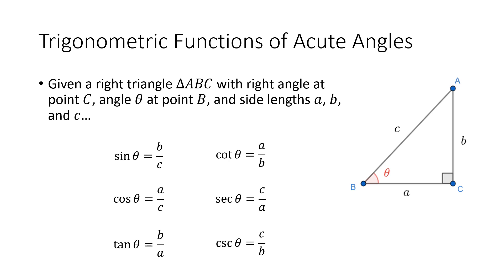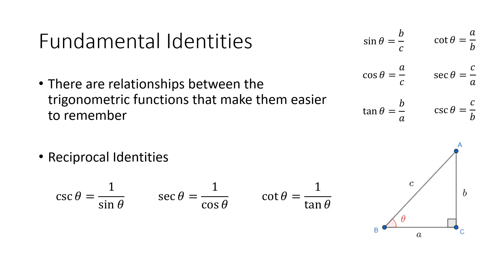then we've got sine, cosine, tangent, cotangent, secant, and cosecant, which are all ratios of the lengths of the three sides of this triangle. So the fundamental identities are all just going to be based on those definitions of those six functions.